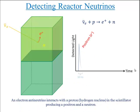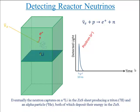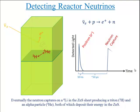The positron deposits its energy promptly in the scintillator while the neutron bounces around for a while. Eventually the neutron captures on a lithium-6 in the zinc sulfide producing a triton and an alpha particle, both of which deposit their energy in the zinc sulfide.